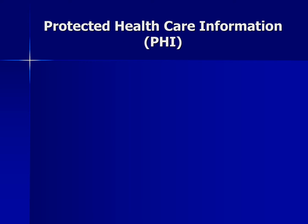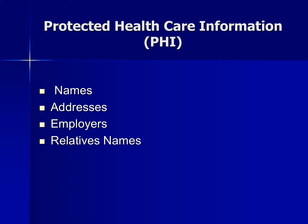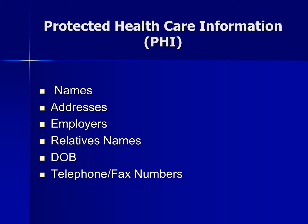PHI stands for protected healthcare information and includes, but is not limited to: names, addresses, employers, relatives' names, date of birth, telephone and fax numbers, email, and social security numbers.